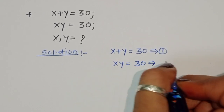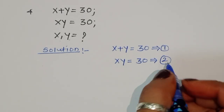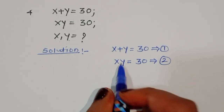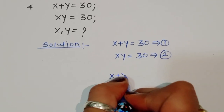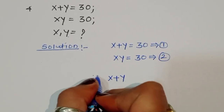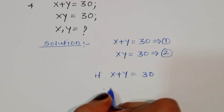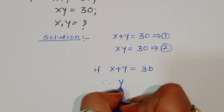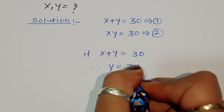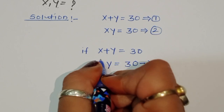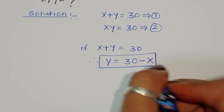According to equation 1, x plus y is equal to 30. Therefore, y is equal to 30 minus x. This is the value of y according to equation 1, and we will call this equation number 3.